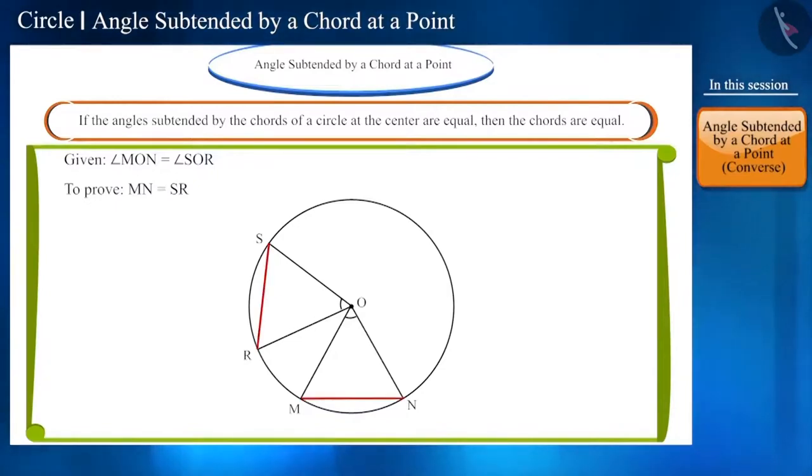Friends, how can we prove that these two chords are equal? Yes, if we prove these two triangles to be congruent, then both these sides will be equal. Because the corresponding parts of congruent triangles are equal, their corresponding sides will also be equal.